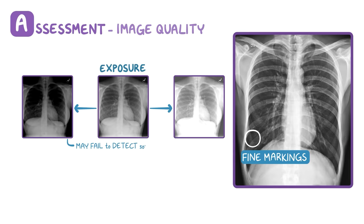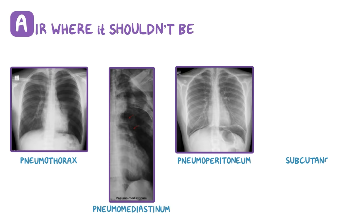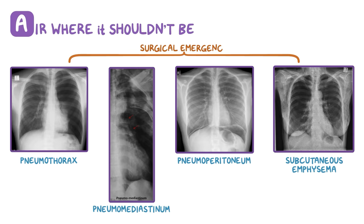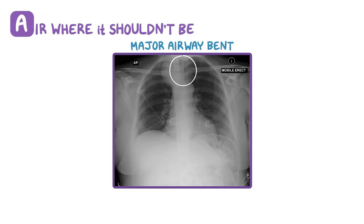A also reminds us to make sure there isn't air where it shouldn't be. Finding air where it should not be — or more commonly, ruling it out — remains one of the most important uses of medical x-rays. Diagnoses like pneumothorax, pneumomediastinum, pneumoperitoneum, and subcutaneous emphysema are all examples of air where it shouldn't be. All of these are surgical emergencies and can be diagnosed by a simple chest x-ray. Finally, if the major airways like the trachea are bent or deviated, it may signal an underlying mass.